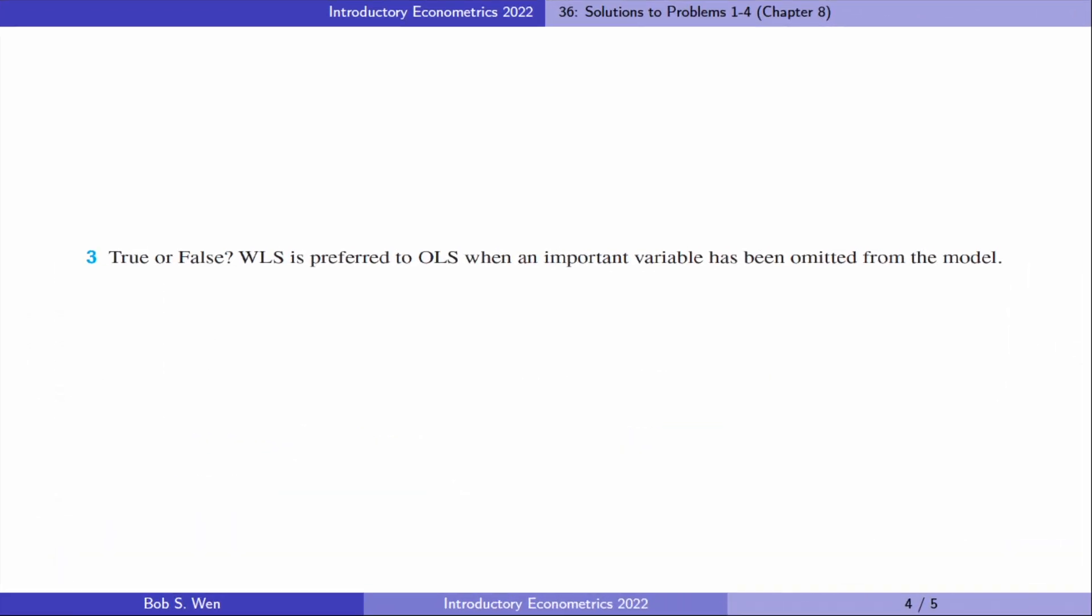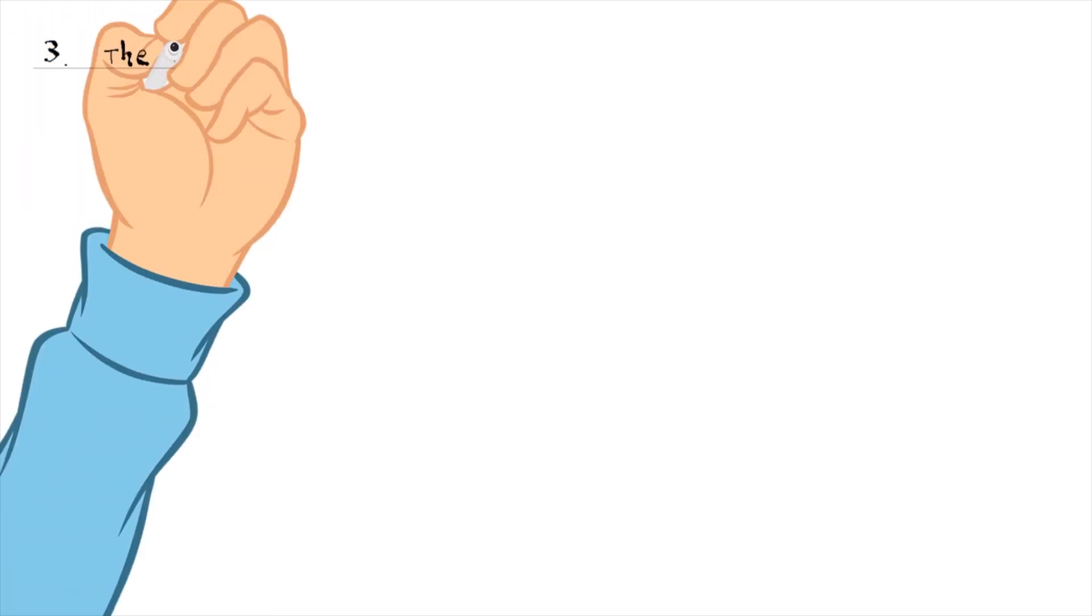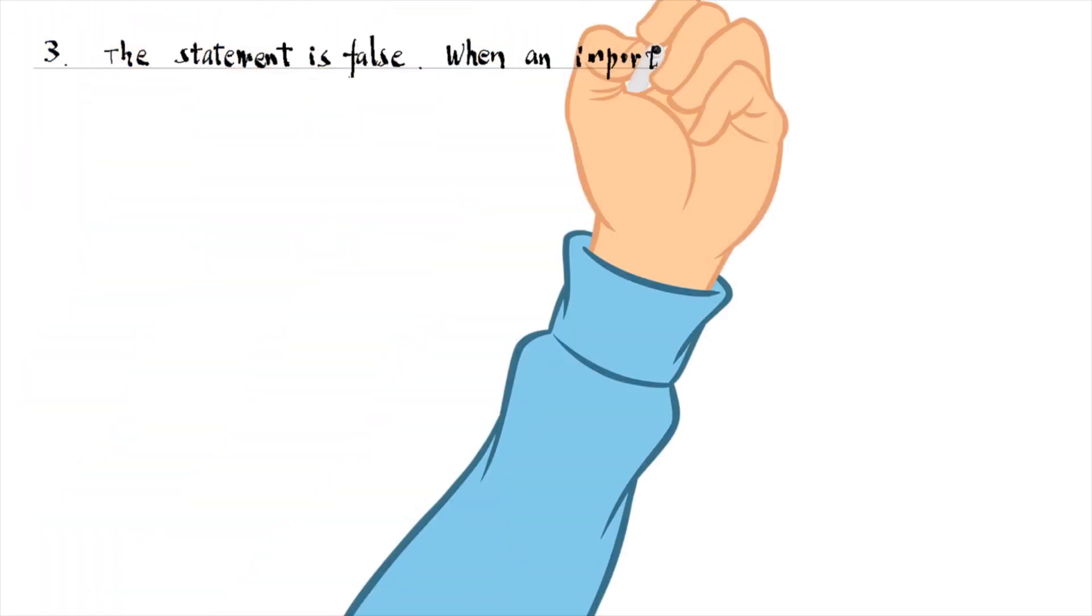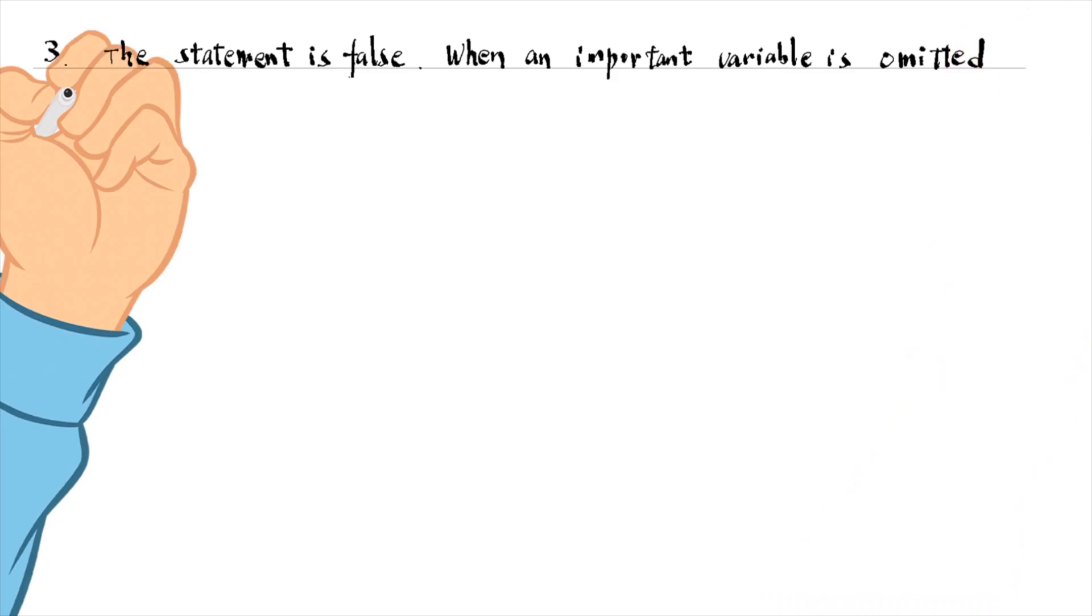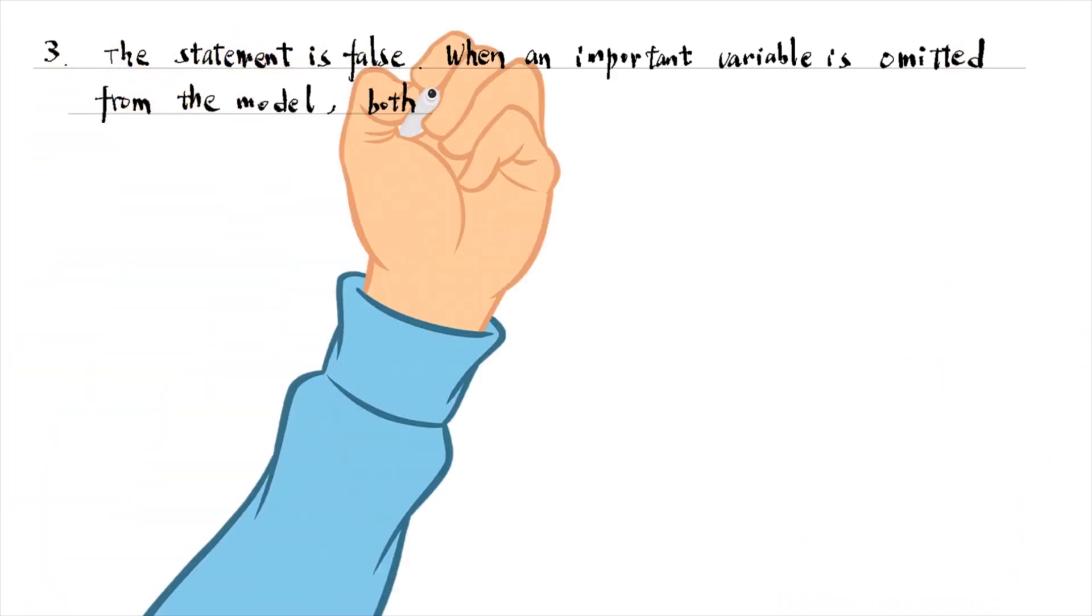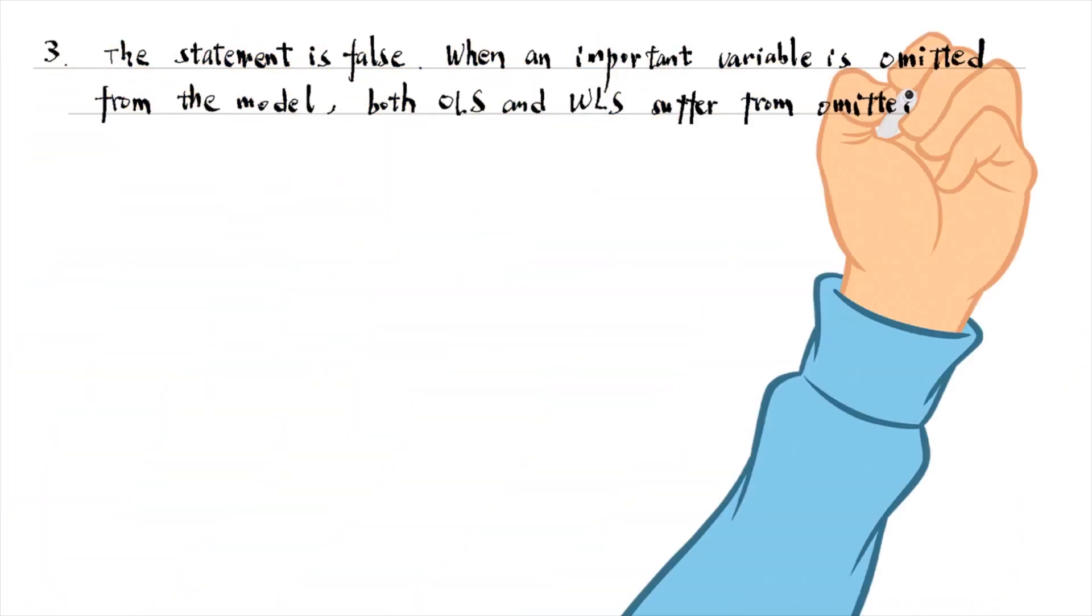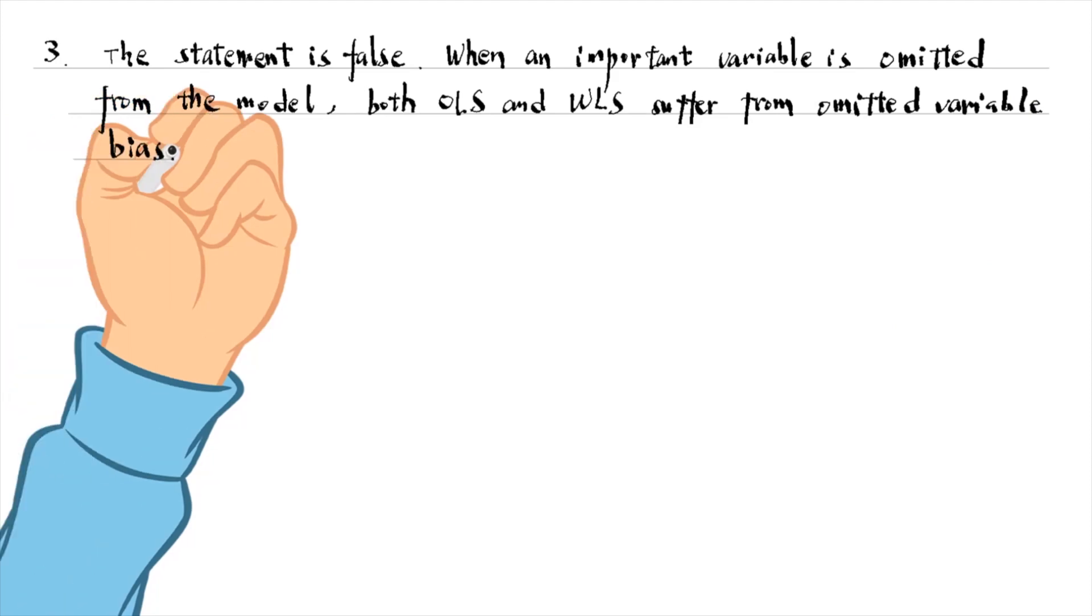For problem 3, the statement is false. When an important variable has been omitted from the model, both OLS and WLS suffer from omitted variable bias. We cannot tell which one is better.